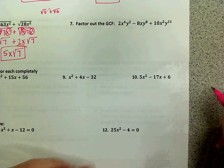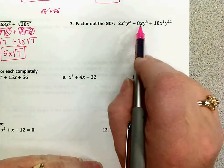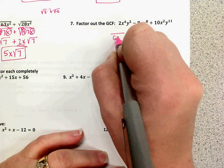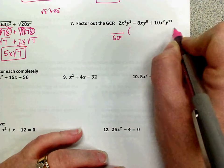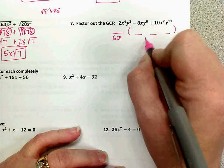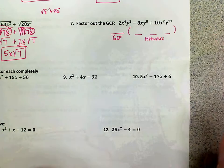On number seven, we're factoring out the GCF. We have three terms, so when we factor it out, we're going to have our GCF on the outside, and inside the parentheses, we'll have three terms that are what I call the leftovers after we take out the GCF.